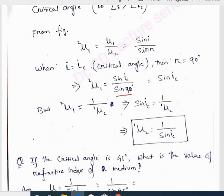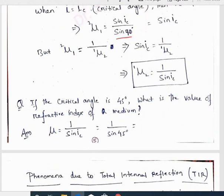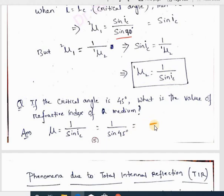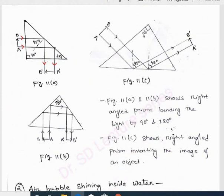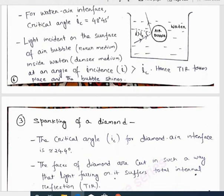Let's solve a numerical example based on this formula. If the critical angle is 40 degrees, what is the refractive index of the medium? Since sin(ic) = 1/mu, and ic = 40 degrees, mu = 1 / sin(40°). You can calculate the value of the refractive index of the medium from this. In the next section we will discuss phenomena related to total internal reflection.